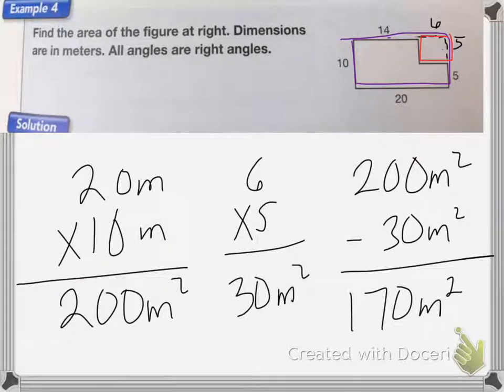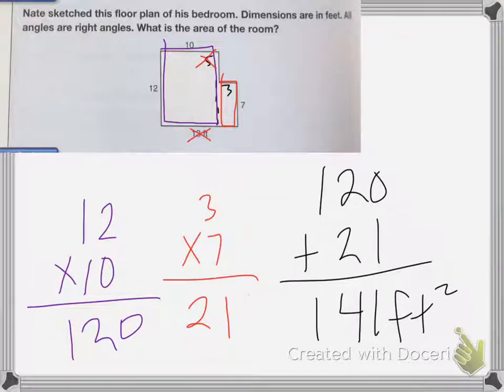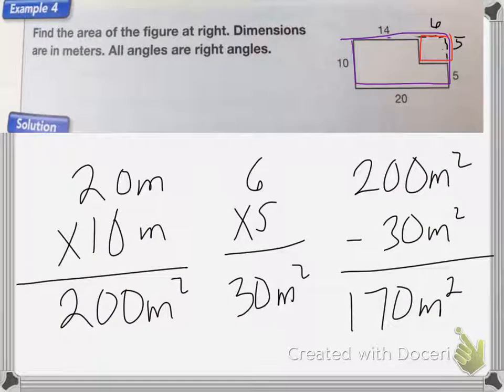So those are two ways you can do it. You can either divide the square into two smaller squares, or you can find the area of the big square with the missing piece included, and then find the area of that missing piece and subtract it from it. And that's it for this lesson.